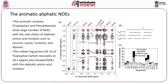The aromatic residues tryptophan and phenylalanine show a large number of NOEs with the side chains of aliphatic amino acid residues such as leucine, lysine, cysteine, and alanine. The indole ring proton N-epsilon H of tryptophan, resonating at 10.16 ppm, shows NOEs with aliphatic amino acid residues as shown in the leftmost strip. NOEs between aromatic residues in the range of 7.1 to 7.6 ppm with different aliphatic residues are also shown. The number of NOEs per residue is compiled in a bar chart.